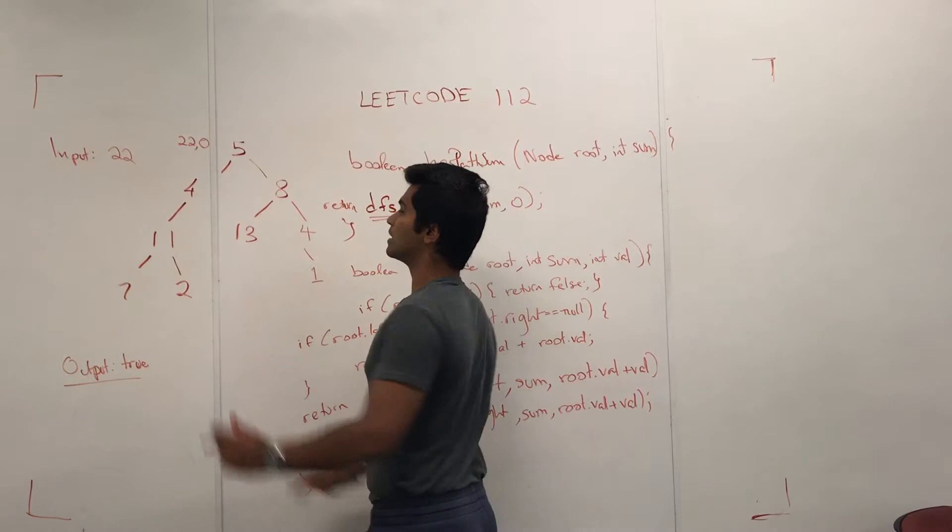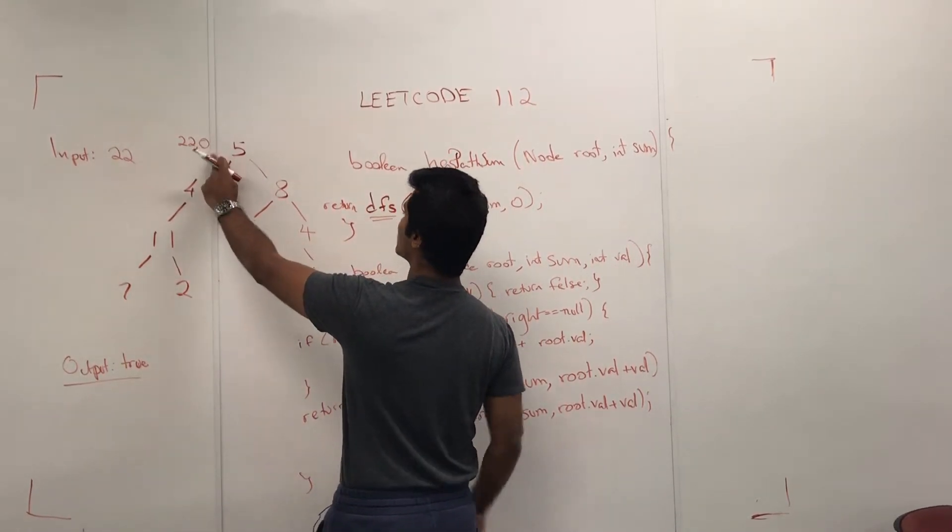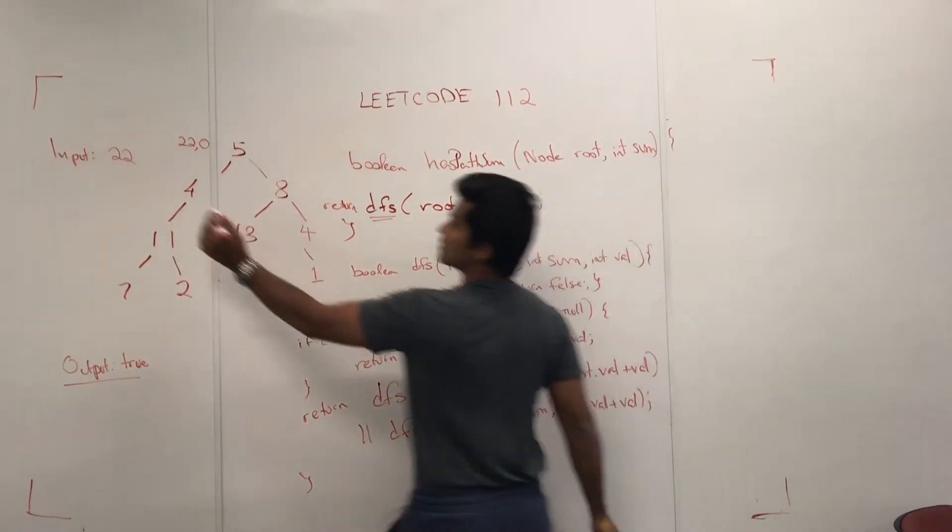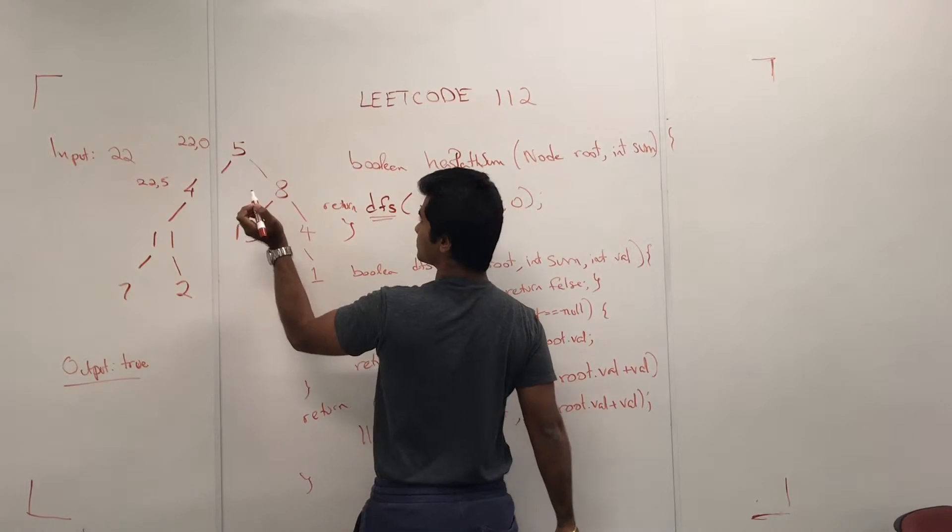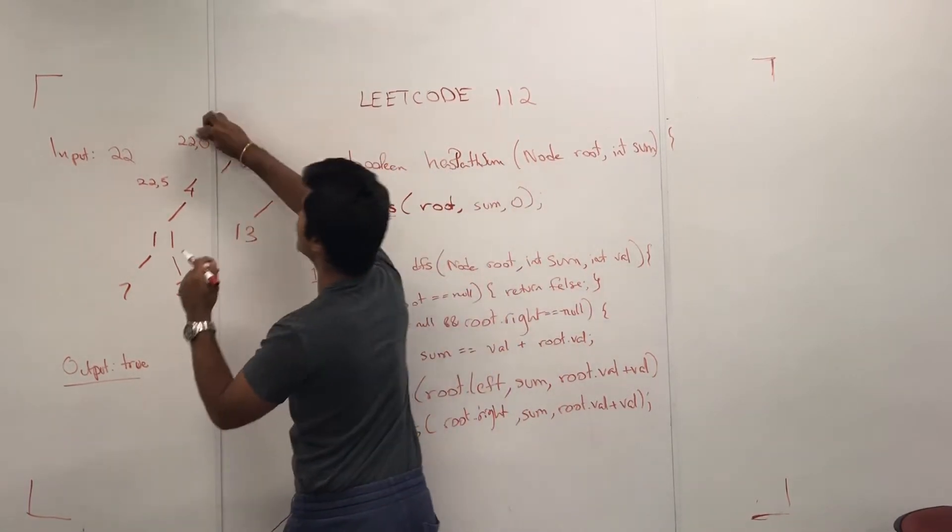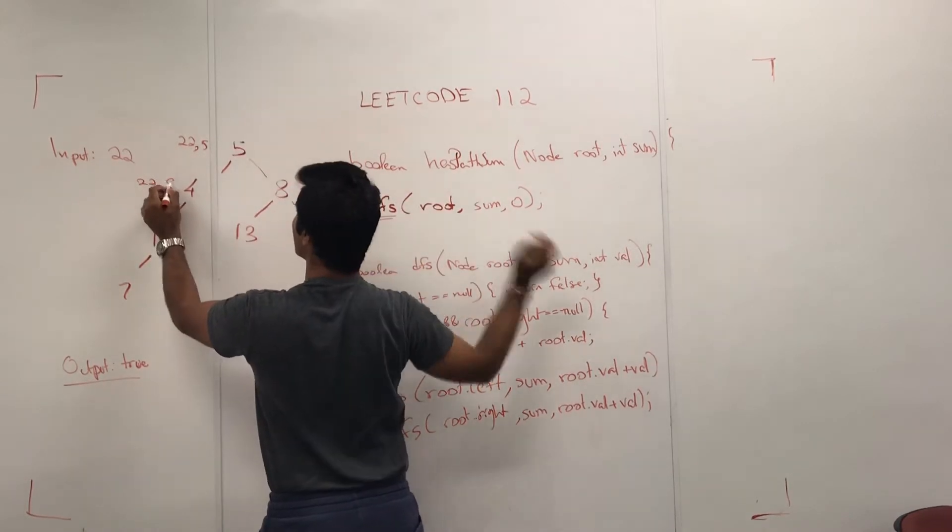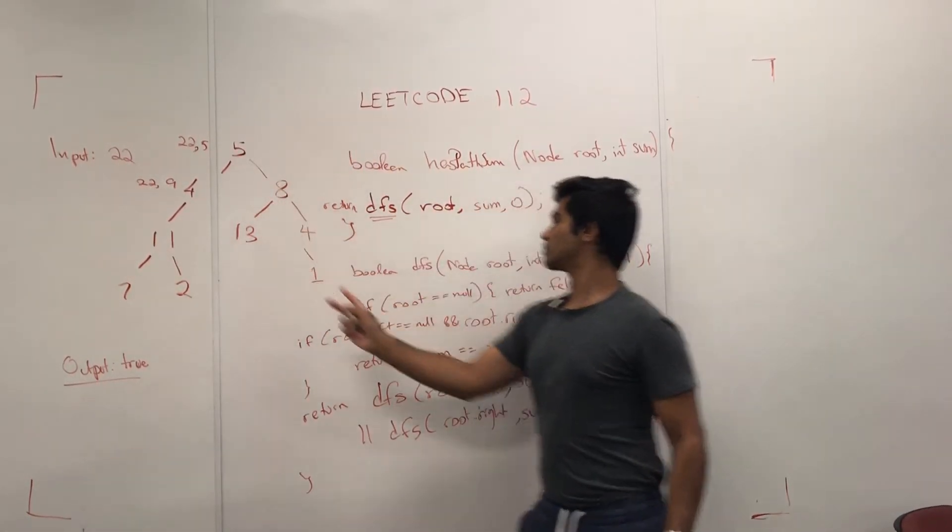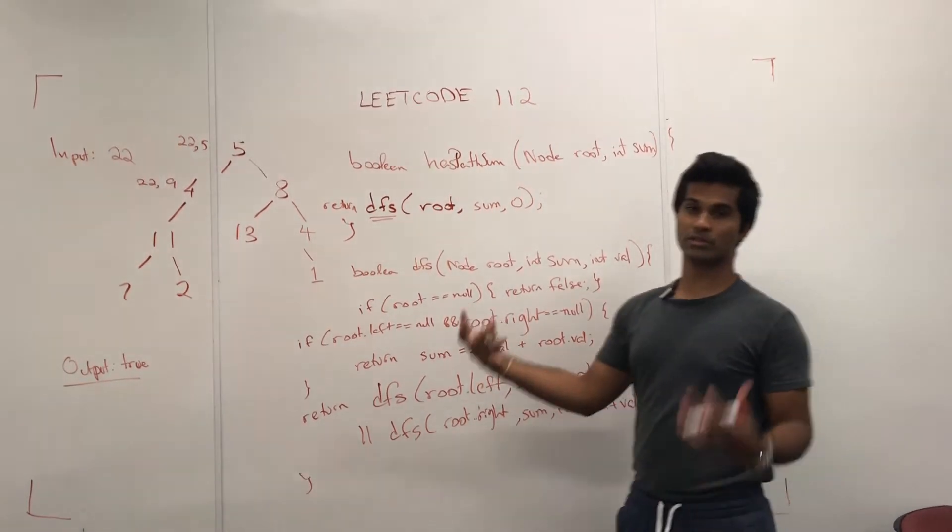Now it's going to go to the left side and it's going to pass its value. So 22, 0 - 22 is the sum that's input, and 0 is the 0 we gave. So 22 and 5. It's going to be 22 and 5 at this point. The reason it's going to be 5 here is because we're going to do value, which is the 0 plus root.val, which is 5.